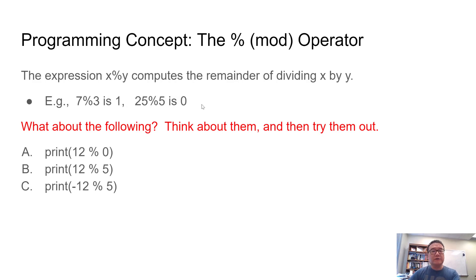And 25 mod 5 is 0, because 25 is a multiple of 5. So in some sense, this percent operator allows us to determine whether one number is multiple of the other by simply checking whether the remainder of dividing that number is 0.